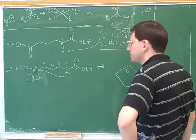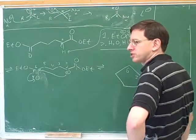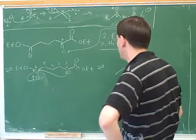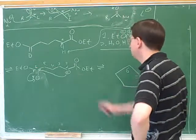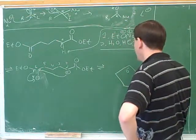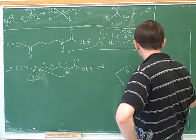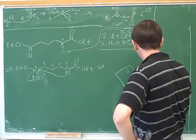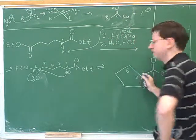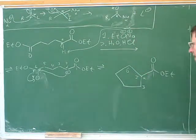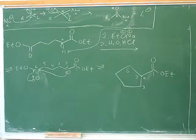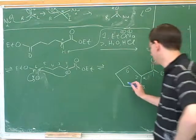We just have to very carefully ask who everyone's attached to. You already decided who the number 2 is attached to. It's attached to the number 3, and then it's also attached to the number 1, and an oxygen, and the OET. So you got this exactly right. And then we simply have to go around the ring and see who everyone is attached to.